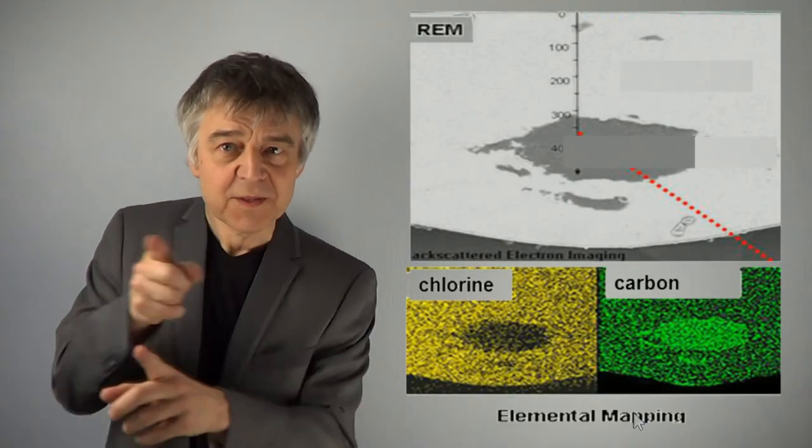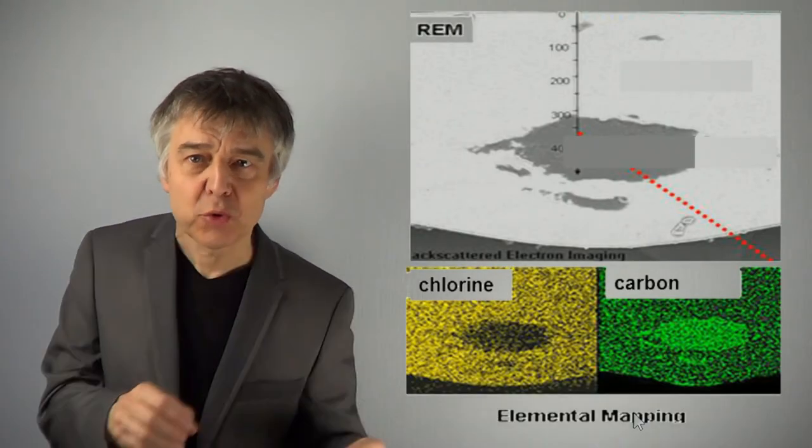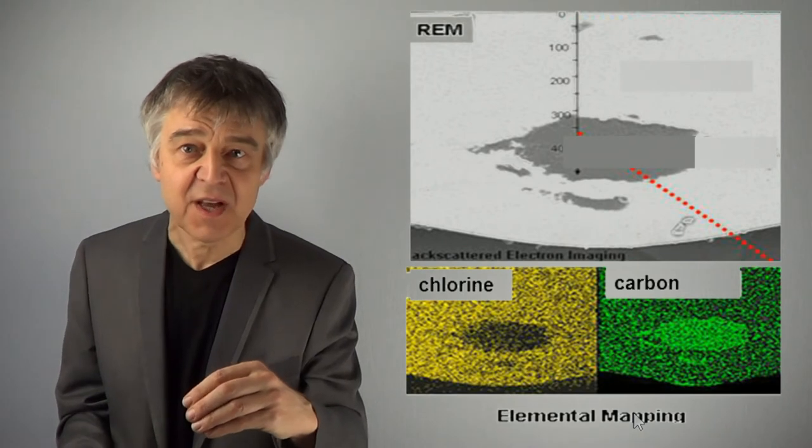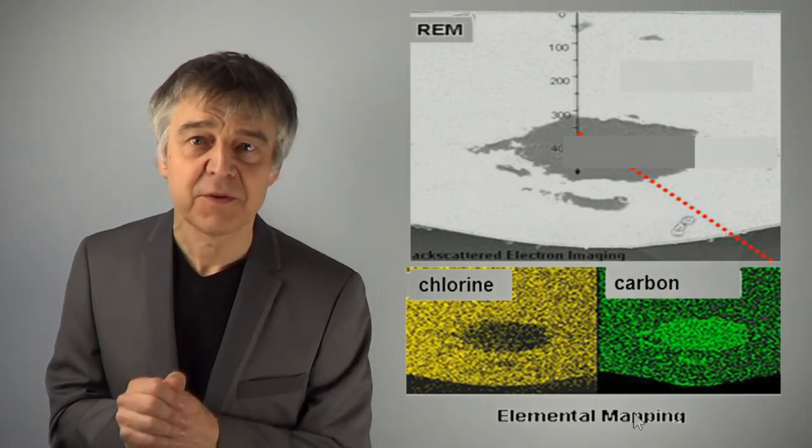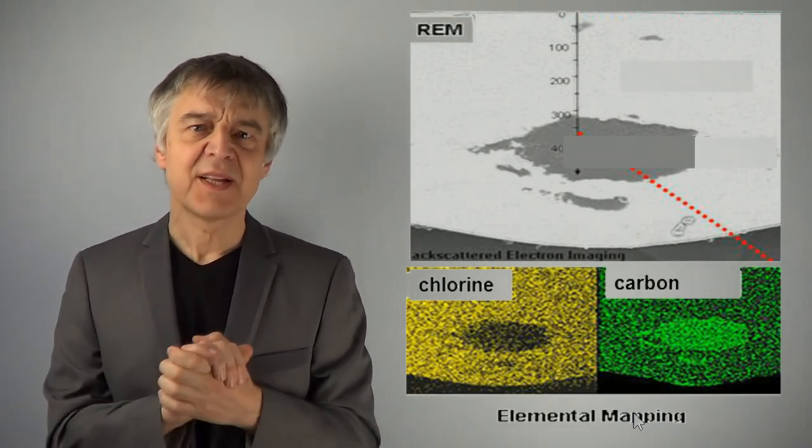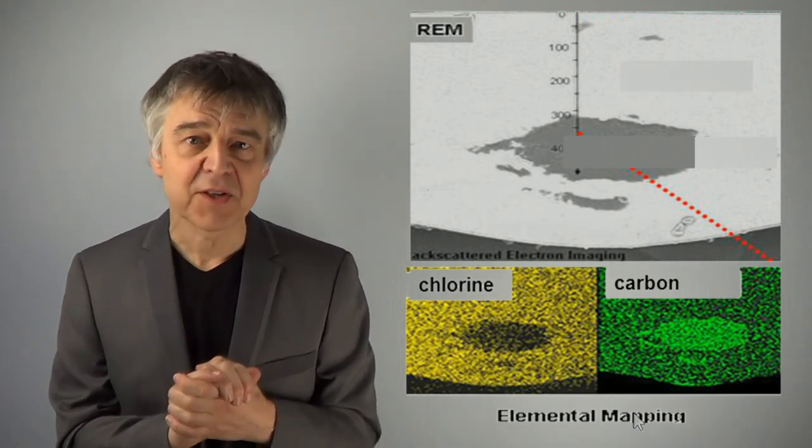We can also reverse the ESCA process. We may shoot electrons at the surface and analyze the resulting photons. This is frequently done in many SEM microscopes.